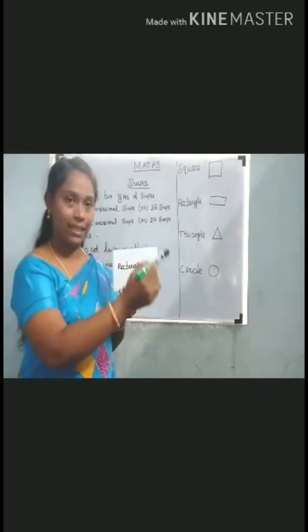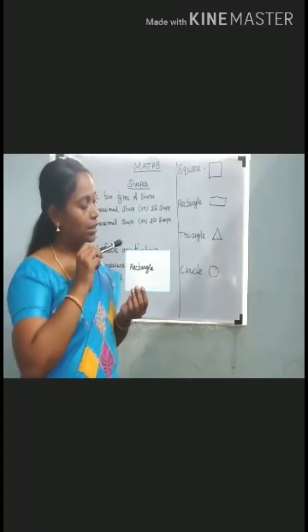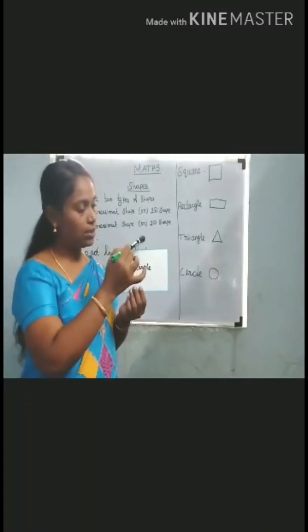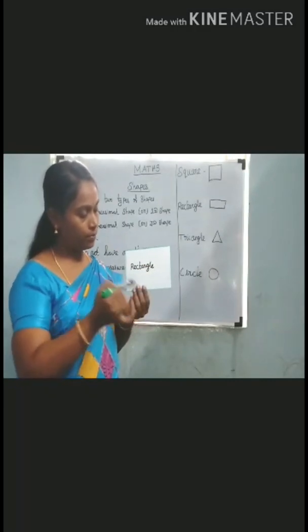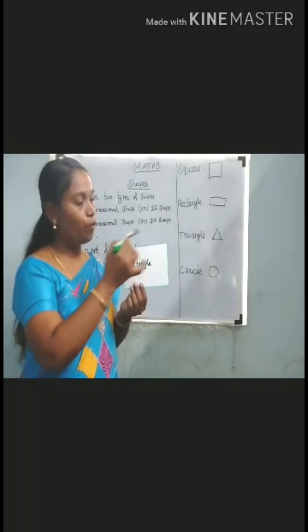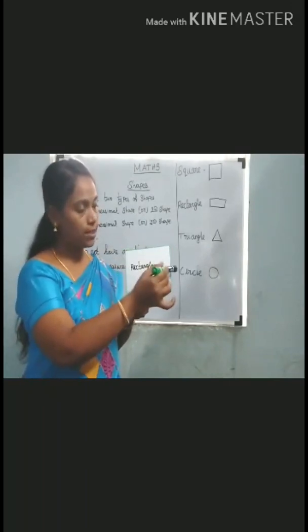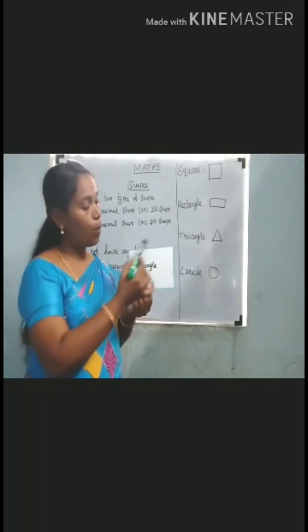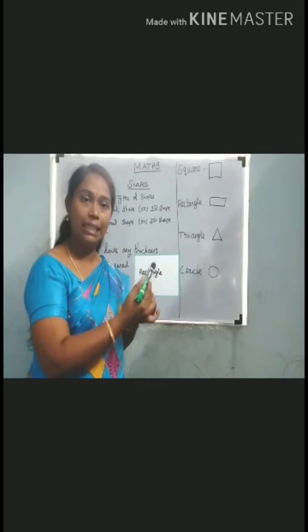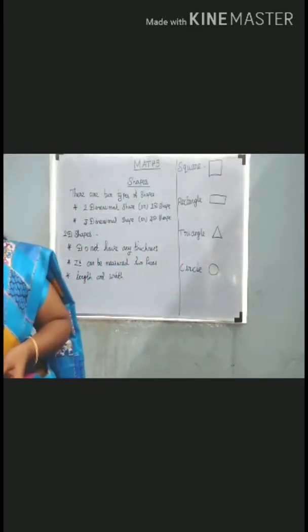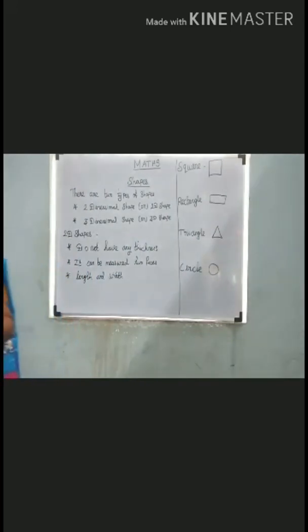This is a rectangle shape. It has corners and sides. It has 4 corners and 4 sides. Opposite sides are equal.